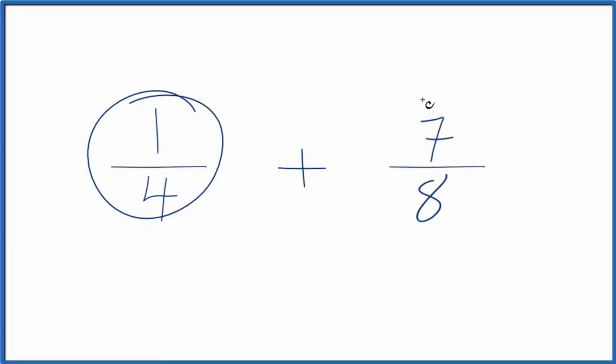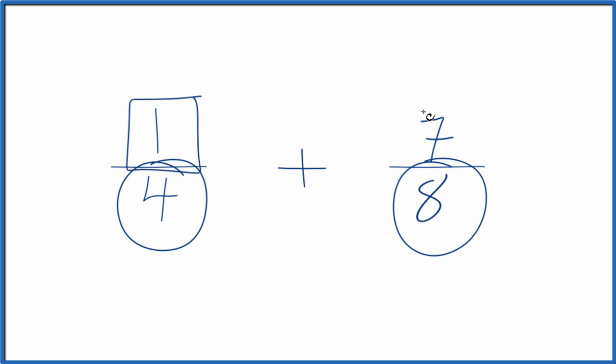Let's add the fractions 1 fourth plus 7 eighths. So to do that, what we need to do is get the denominator to be the same. Because we have the same denominator, we can just add the numerators together and we'll find the sum for 1 fourth plus 7 eighth.